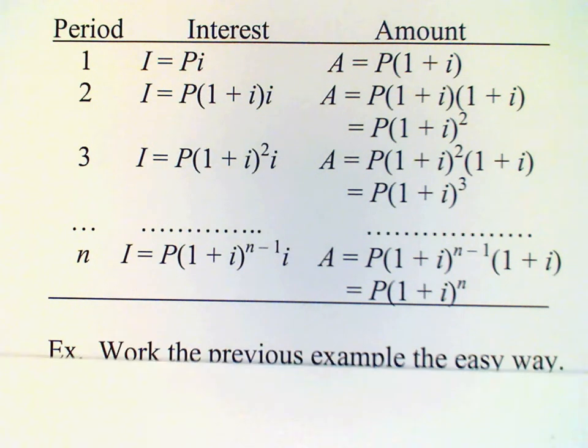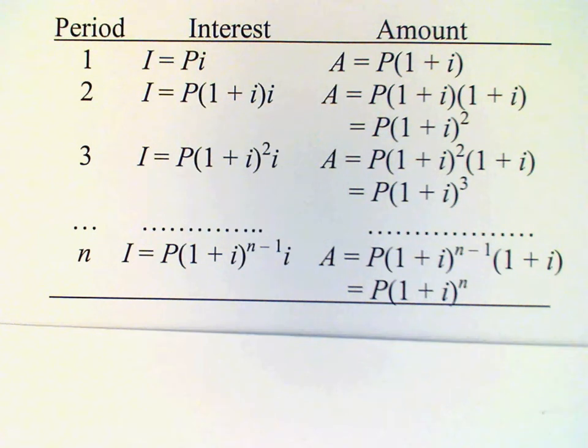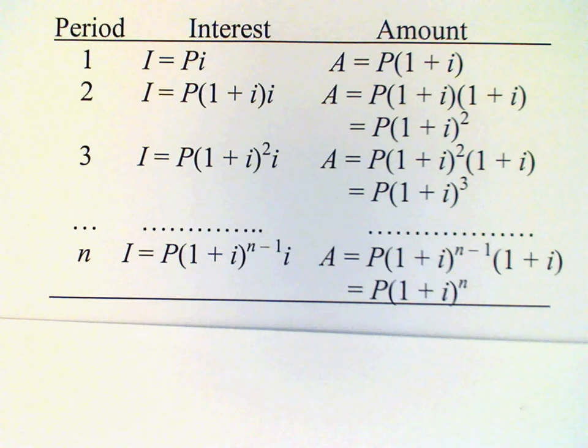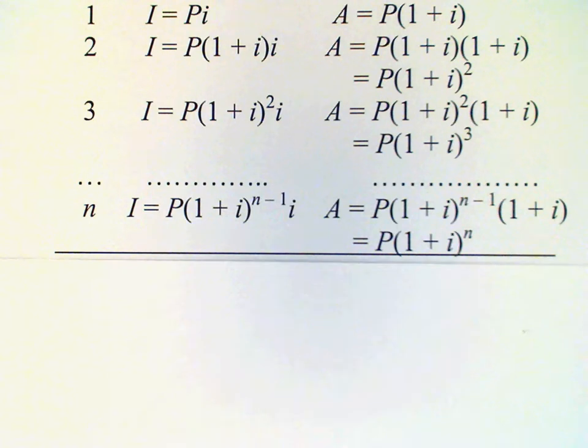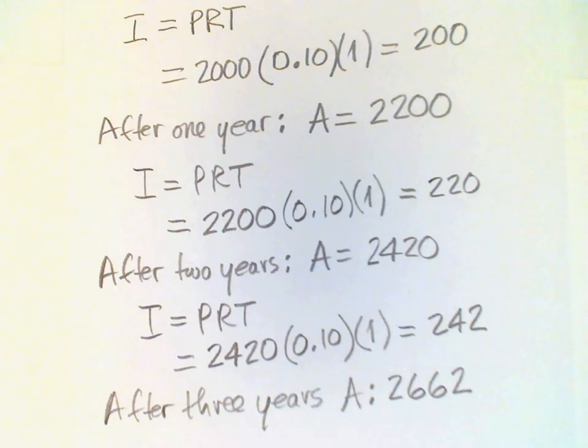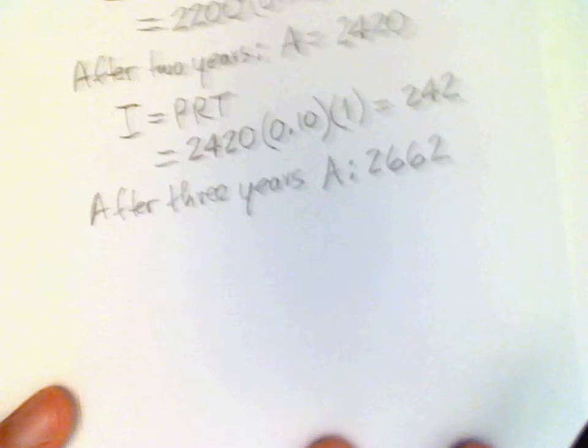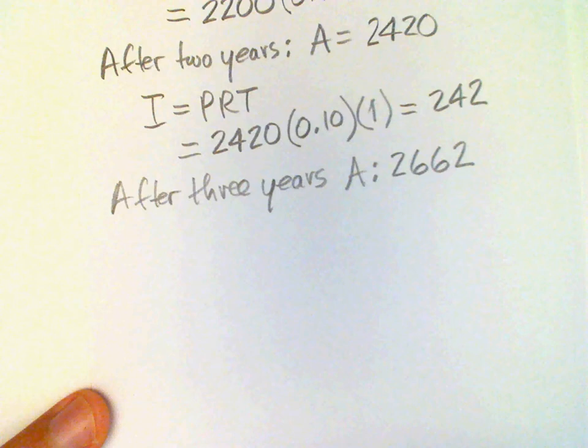Let's work out the compound amount for the previous example using our formula. You remember that we had a worksheet and after three steps we ended up with 2,662. Let's now work it out using the compound amount formula.